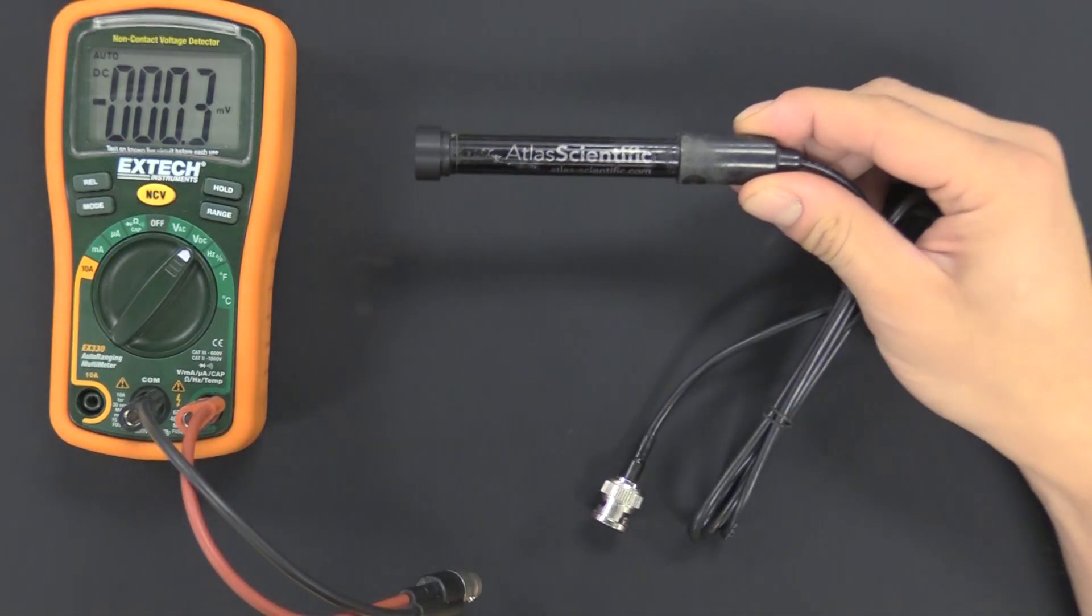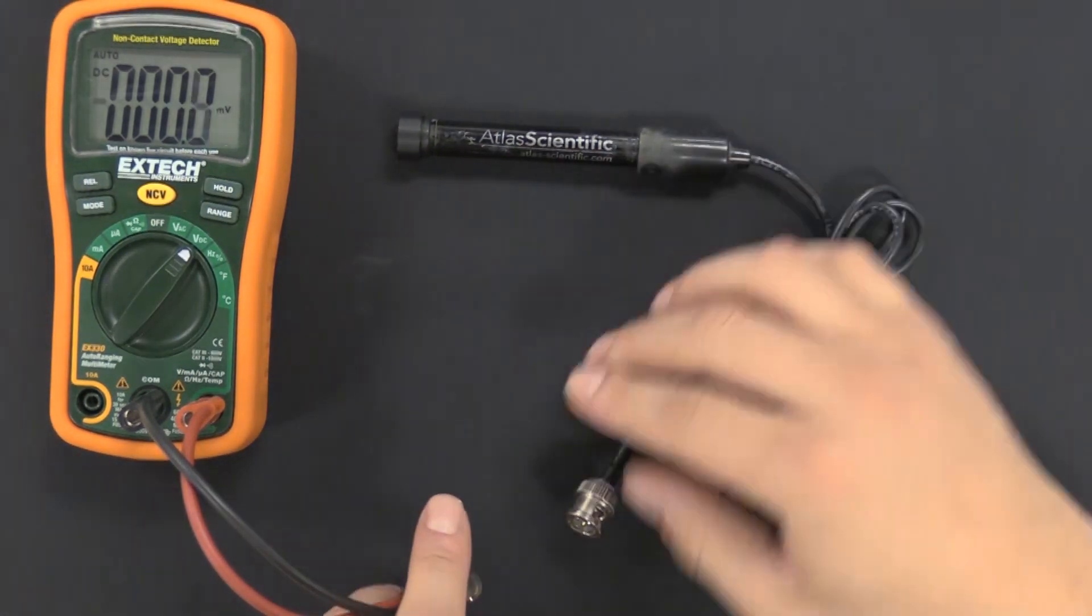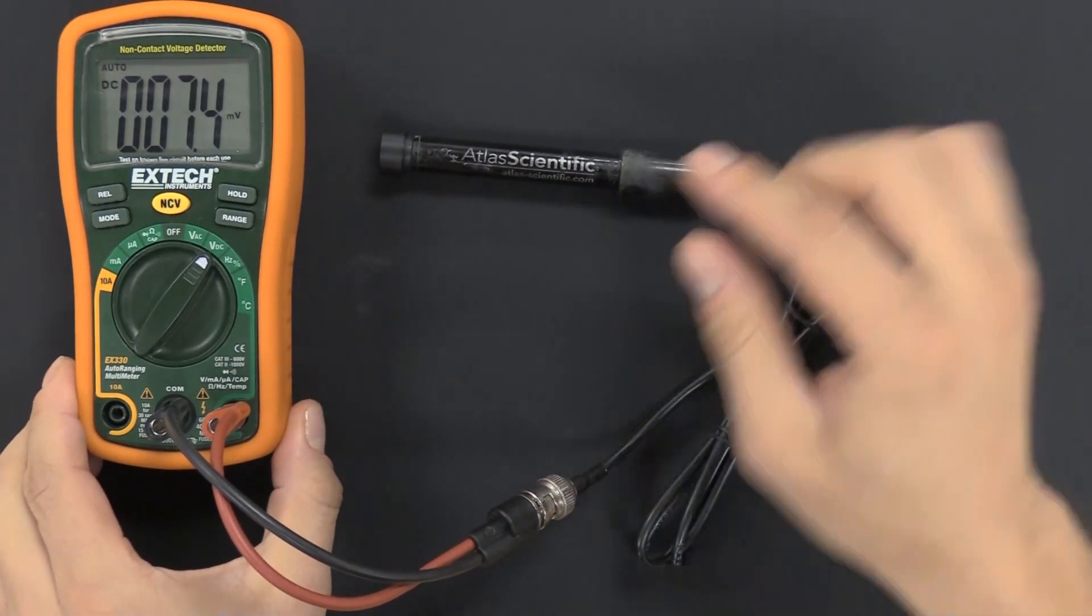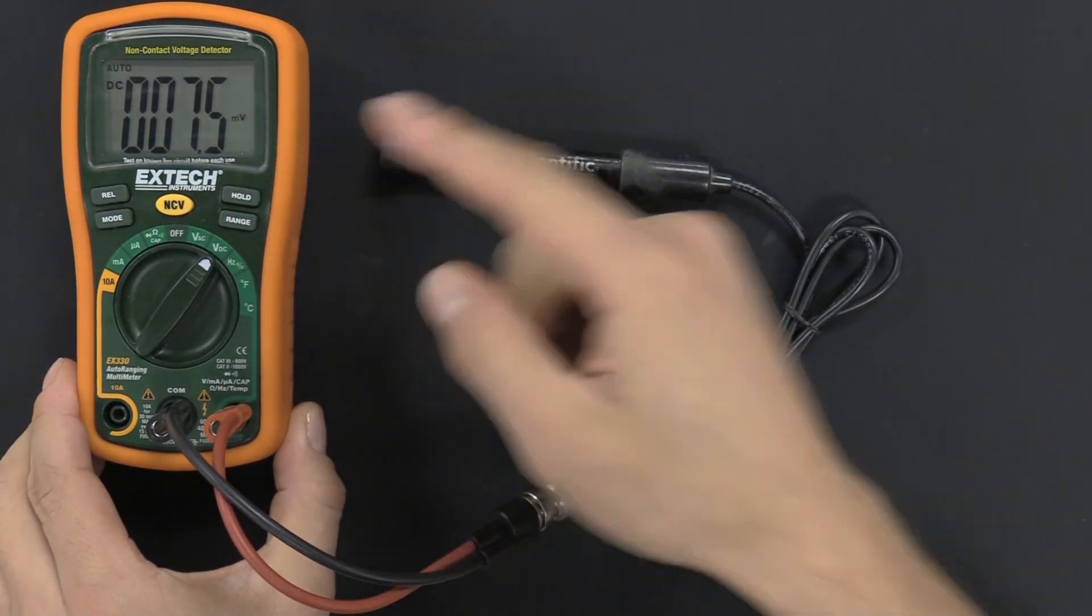So we took it out of the tank and cleaned it up, and now let's connect it to a multimeter. You can see that the voltage coming off the probe is 7.5 millivolts.